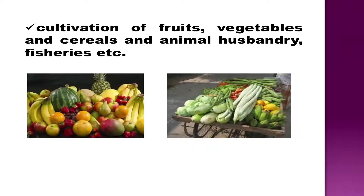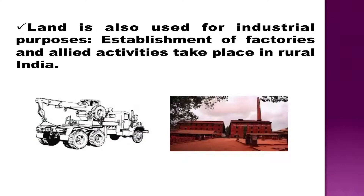Along with this, people also carry out animal husbandry, fisheries and forestries, which are called allied activities. In India, rural area is known for carrying out agricultural and allied activities. Some amount of land in the plain region is specially developed to establish industries and urban areas such as towns and cities.